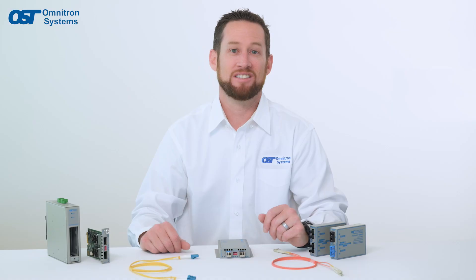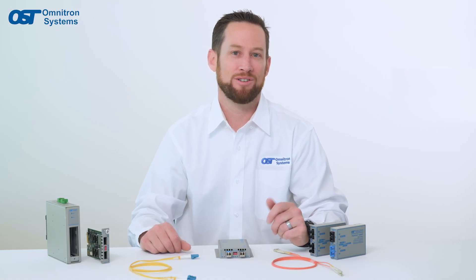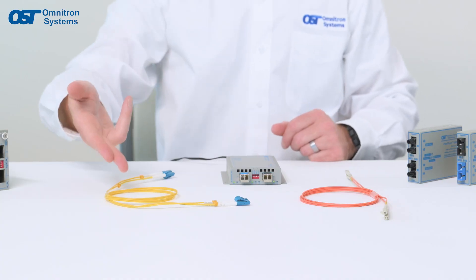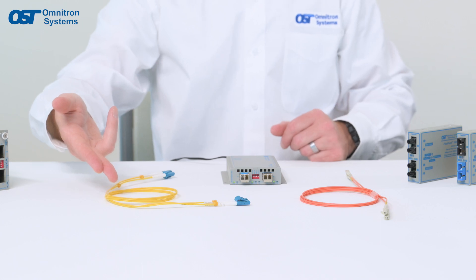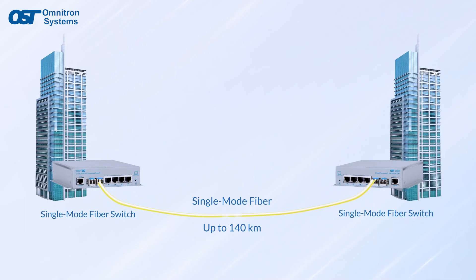First, let's define what single-mode and multi-mode fibers are. Single-mode fiber has a very small core diameter and is designed to carry a single mode of light, which means that it can transmit data over long distances at high speeds with minimal loss.